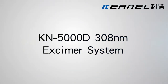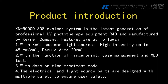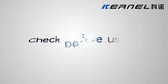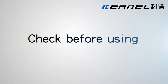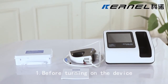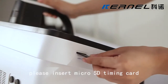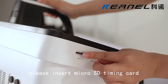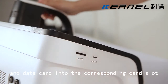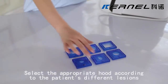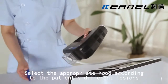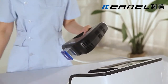KN5000D308 Nanometre Excimer System. Check before using: before turning on the device, please insert the microSD timing card and data card into the corresponding card slot. Select the appropriate hood according to the patient's different lesion.